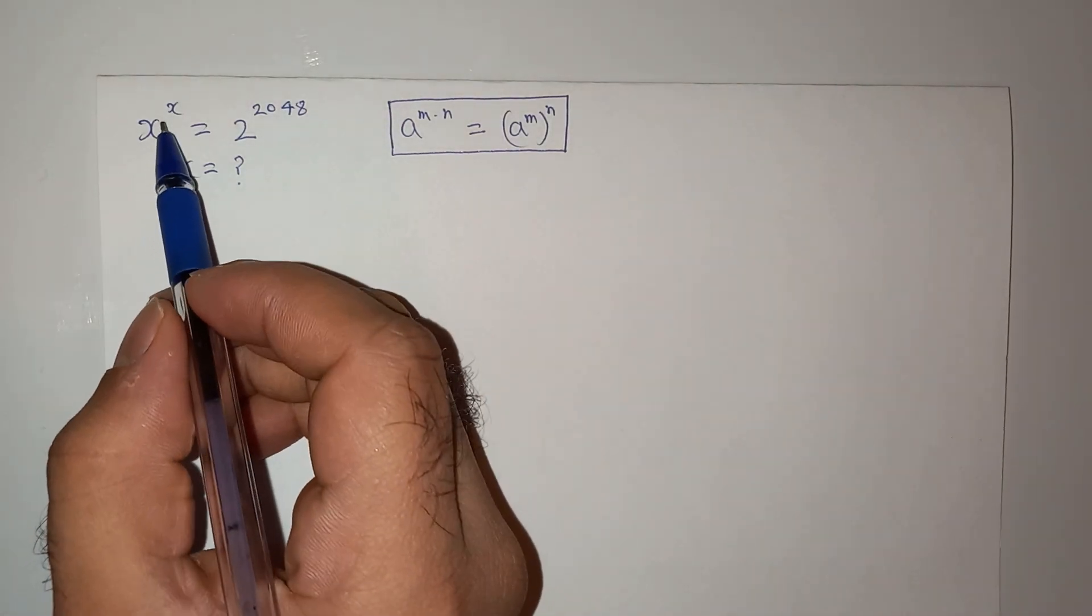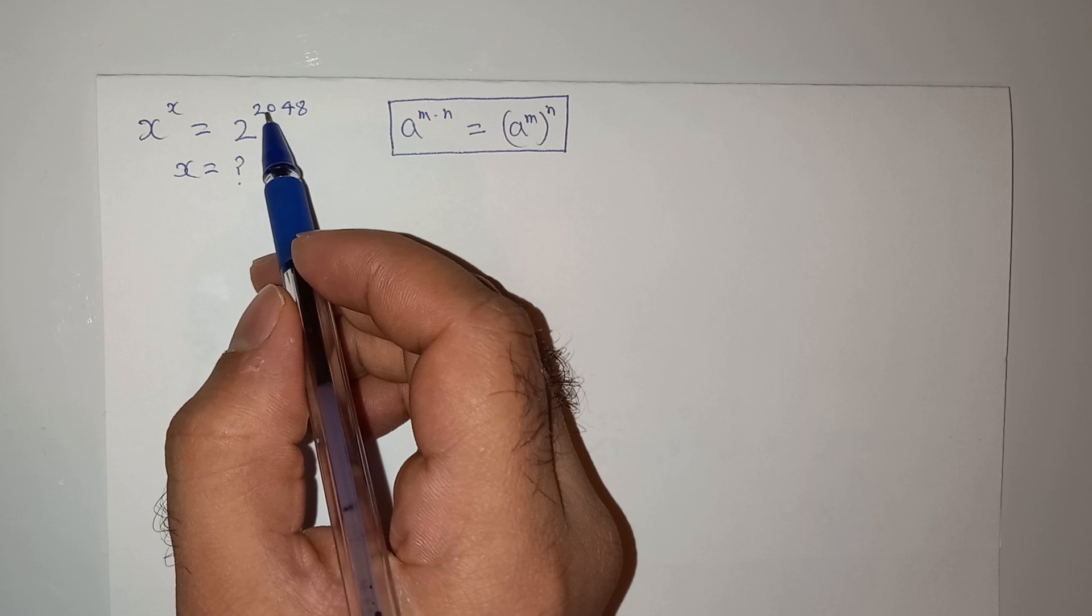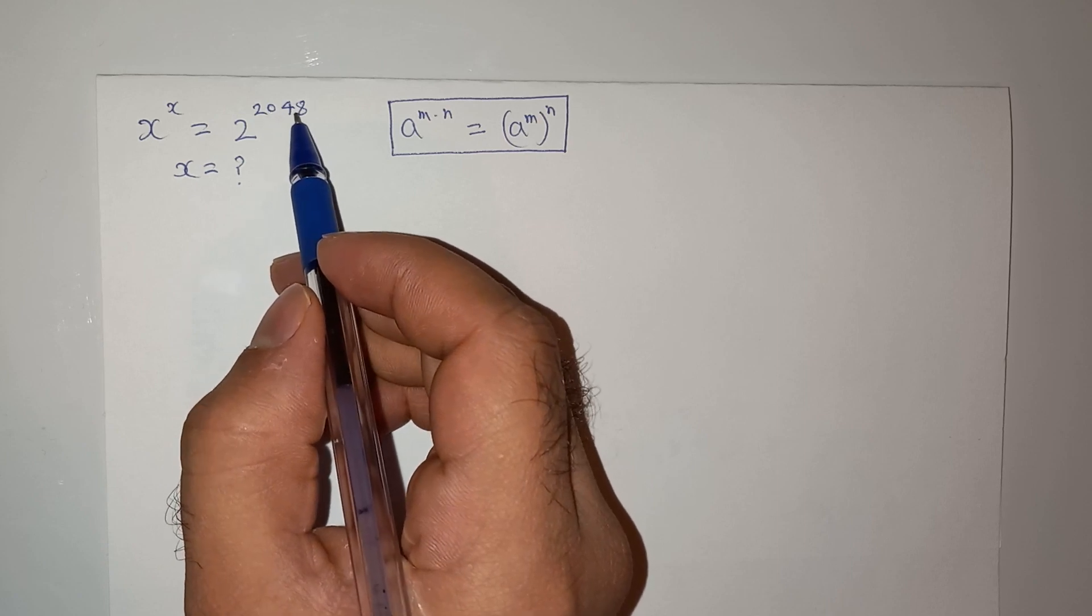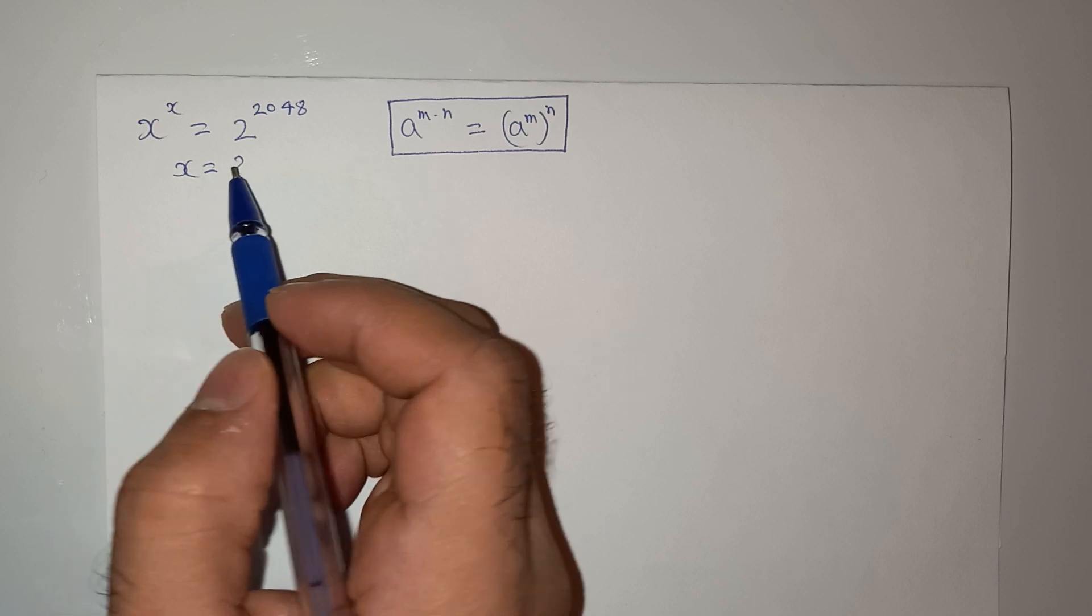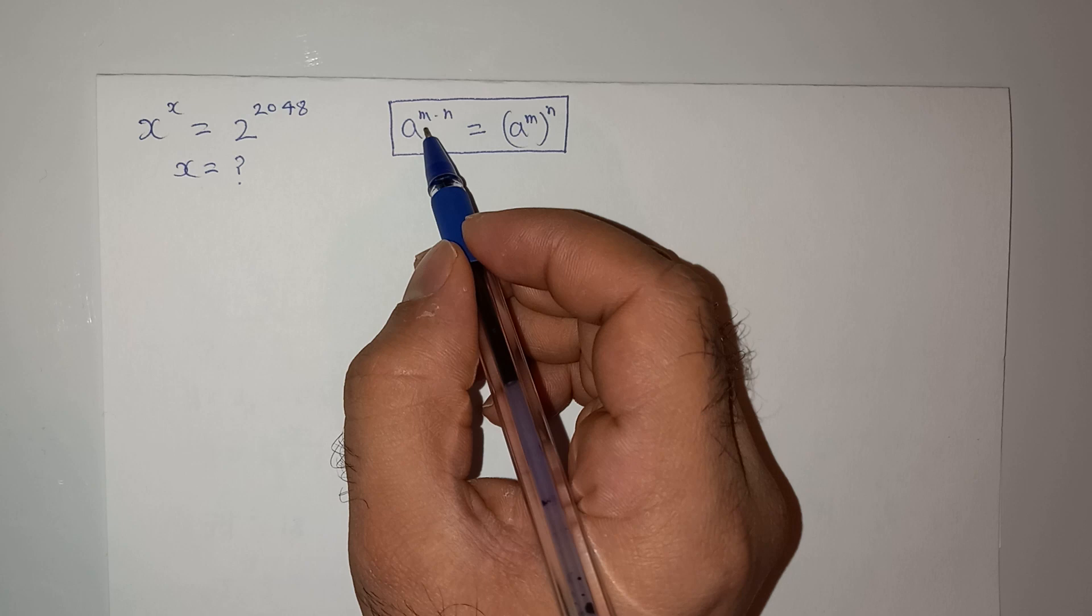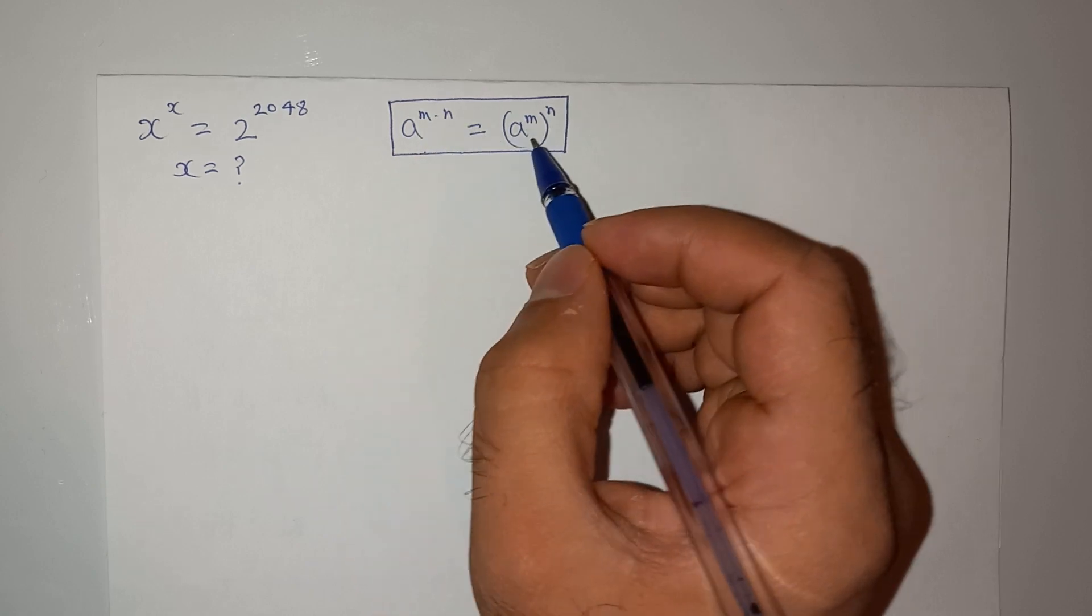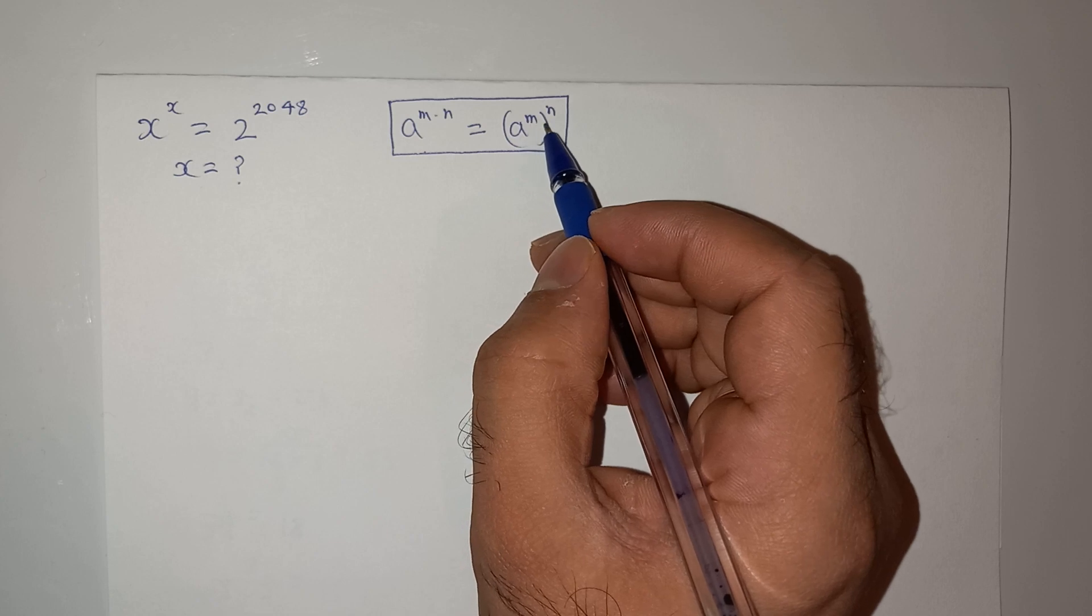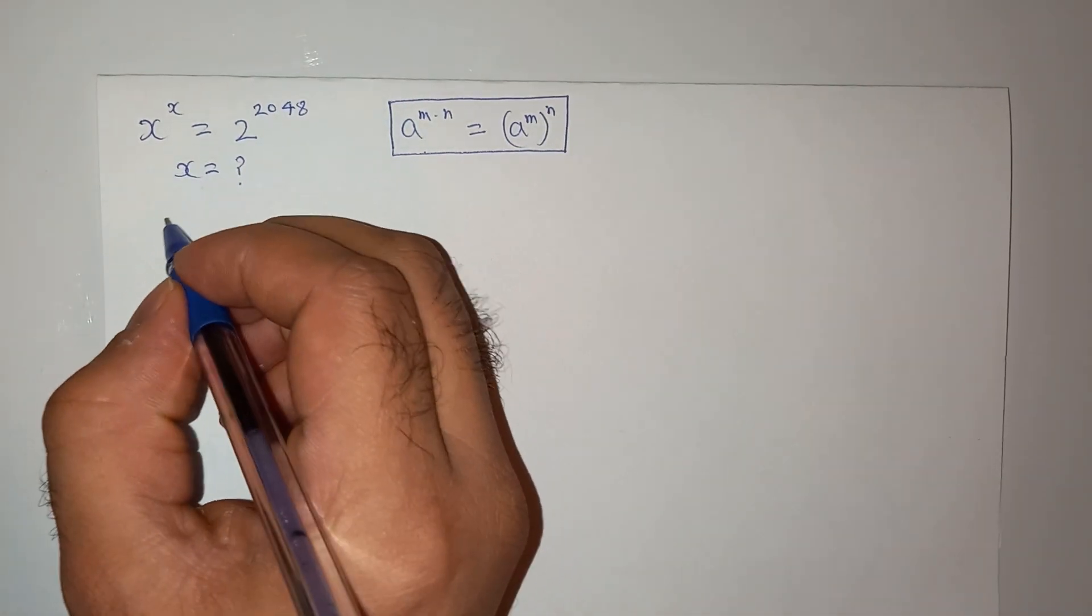Hello friends, we have this question: x^x = 2^2048. We have to find the value of x. To solve this question, I'm going to use this exponential rule which is a^(m×n) = (a^m)^n. So let's try to solve this question.